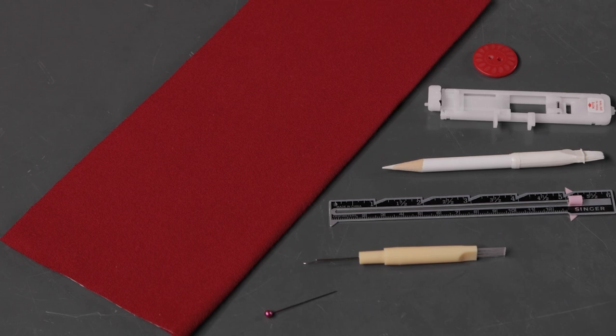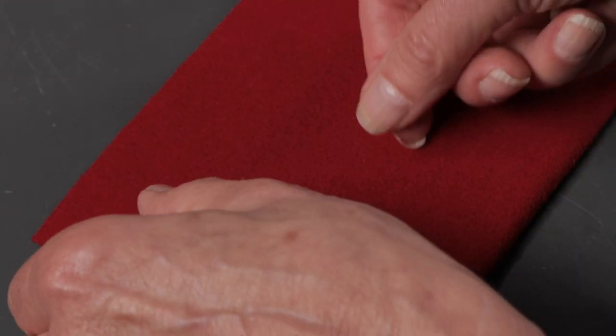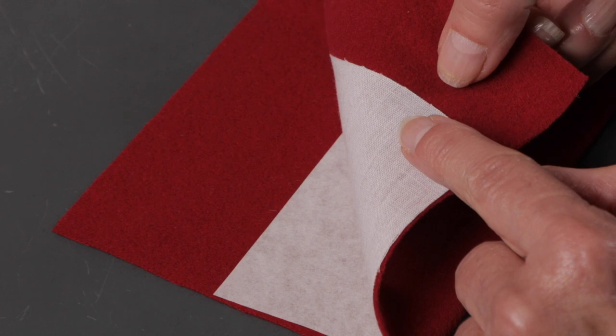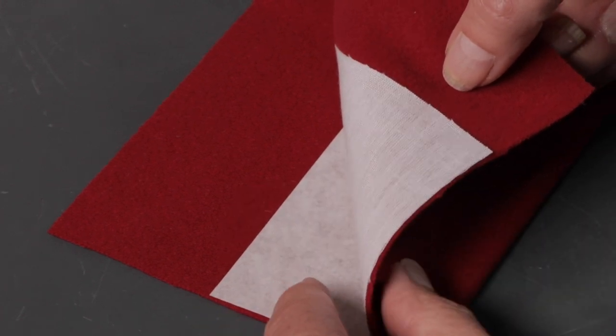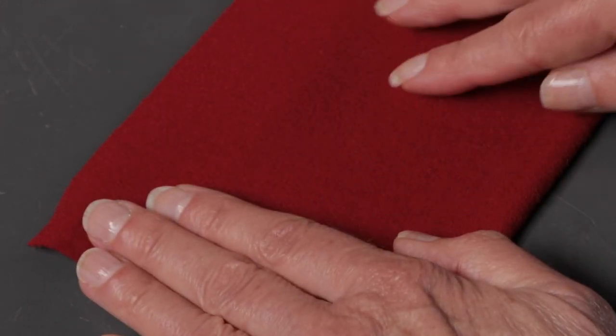Before we mark the fabric for the buttonhole, prepare the fabric by placing interfacing and stabilizer between the layers. This will help prevent the dense stitches of the buttonhole from puckering the fabric.